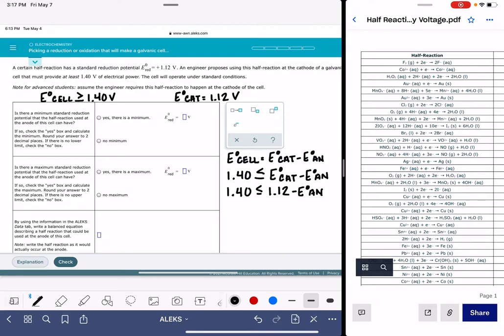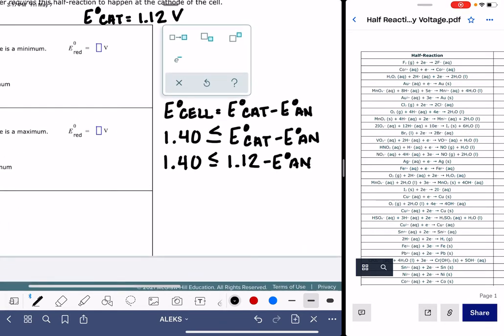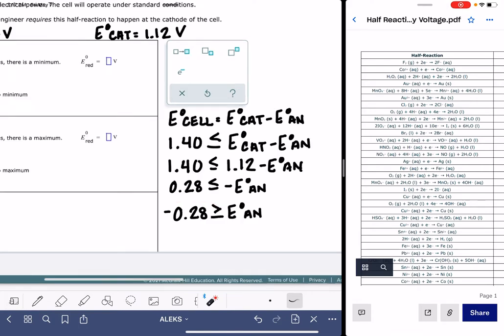So now I just need to solve for the voltage of the anode. I'm going to move that 1.12 over to the other side, 1.40 minus 1.12. So I get 0.28 is less than or equal to negative E anode. And if we want to move that negative sign, we can do that, but we also have to flip around the equality sign. So this is telling me that the voltage of my anode needs to be equal to or less than negative 0.28.